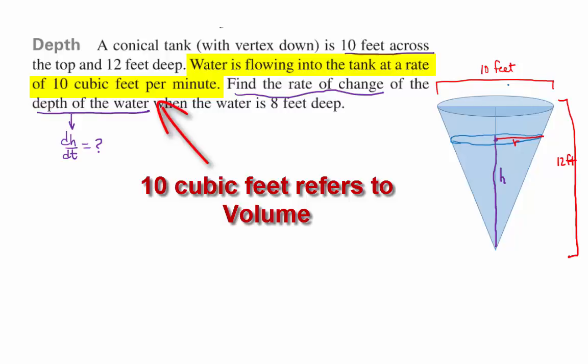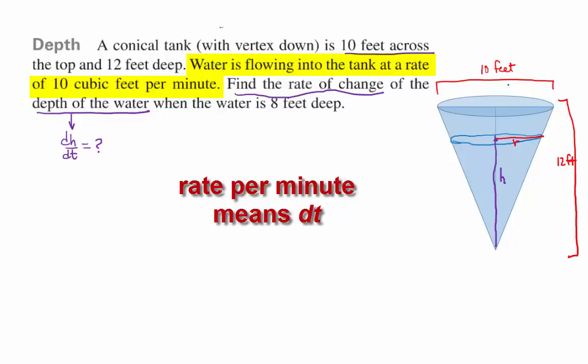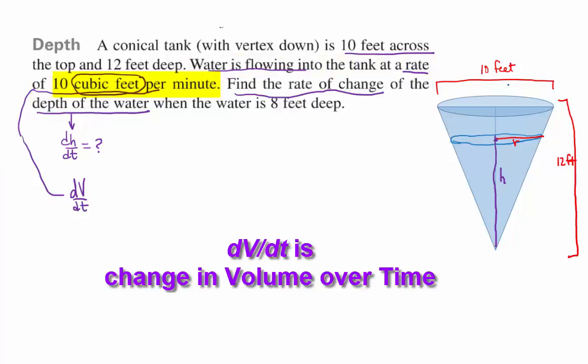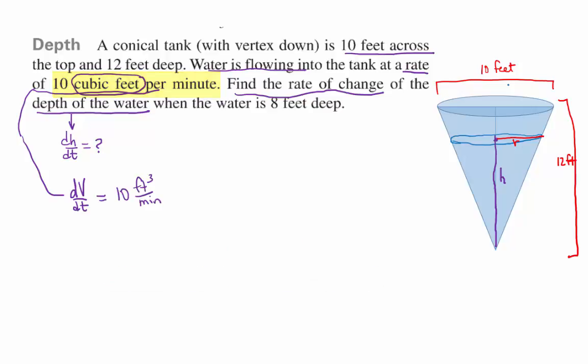Water is flowing into the tank at a rate. Rate tells you that the variable we're going to write down is not just going to be an X or a V. What is it going to be? A DV/DT. So they're telling us here that DV/DT is equal to 10 cubic feet per minute.